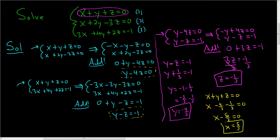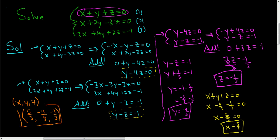And that's it, we're done. You can write the answer as a point in space — an ordered triple (x, y, z). In this case, x was 5 thirds, y was negative 4 thirds, and z was negative 1 third. That is the answer. No matter how many times you do these problems, you always have to be careful — it's very easy to make a careless mistake. I hope this helps.